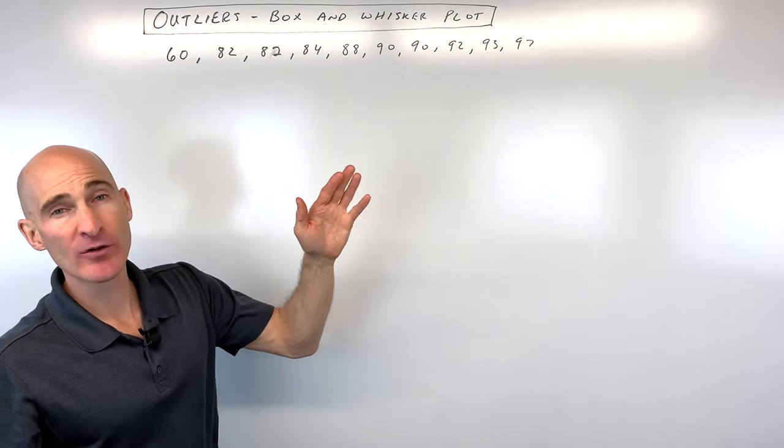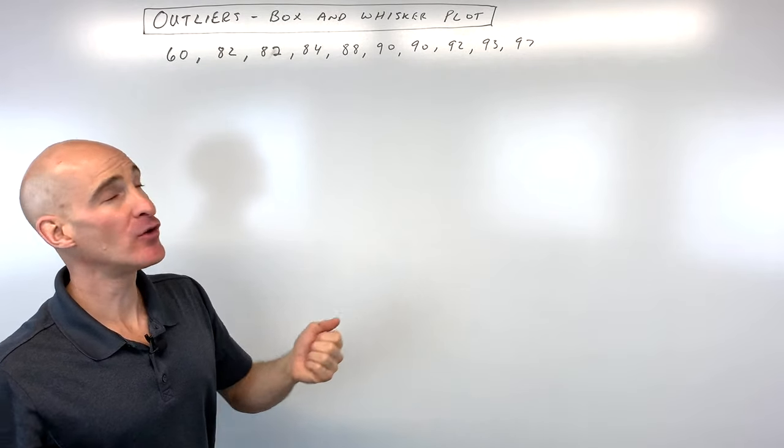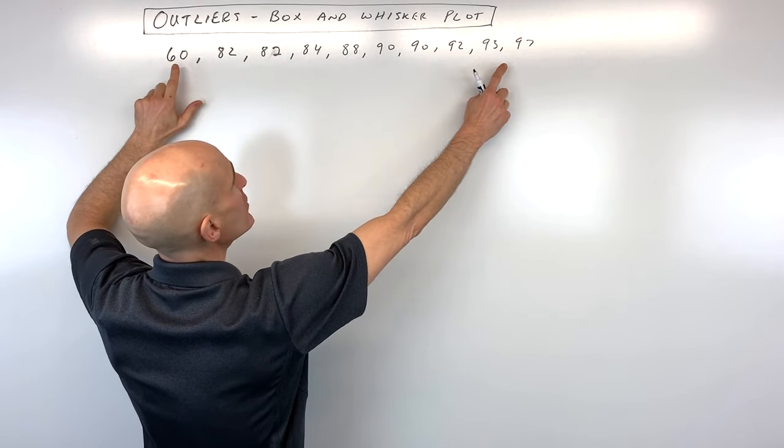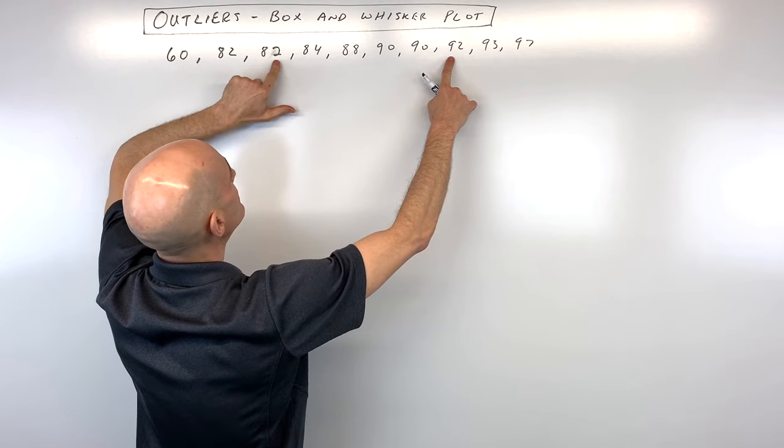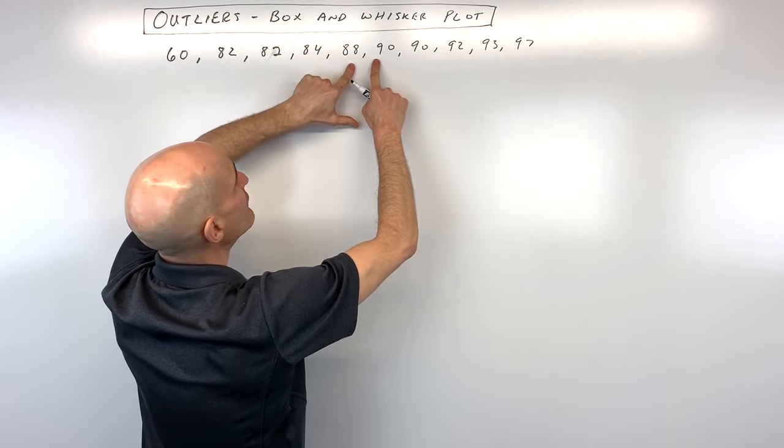The next thing you want to do is find out where the median is. So the median is the middle number. And what you want to do is count towards the middle. So we've got 1 and 1, 2 and 2, 3 and 3, 4 and 4, 5 and 5.